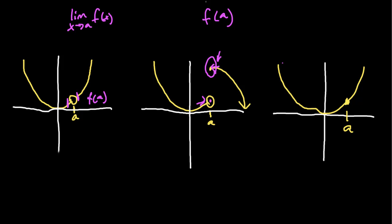Now let's look at our third graph — this is something new. This is a continuous graph, with no discontinuities. As x approaches a from the left side and from the right side, we approach the same point, so the limit exists here. You might also notice that the limit as we approach a is also equal to f(a) — equal to the function evaluated at that point a.